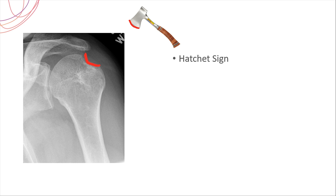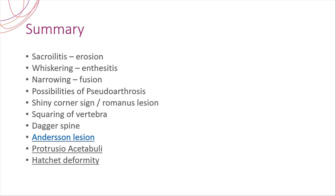If vertical syndesmophytes undergo fracture or pathological fracture, there is a possibility of pseudoarthrosis. Any joint affected by ankylosing spondylitis can show narrowing and periarticular erosions. In summary: sacroiliitis is the earliest manifestation; findings include erosion, sclerosis, enthesitis with whiskering, narrowing progressing to fusion, pseudoarthrosis, shiny corner sign or Romanus lesion, squaring of vertebra, dagger sign, Anderson lesion, protrusio acetabuli in the hip, and hatchet deformity in the shoulder.